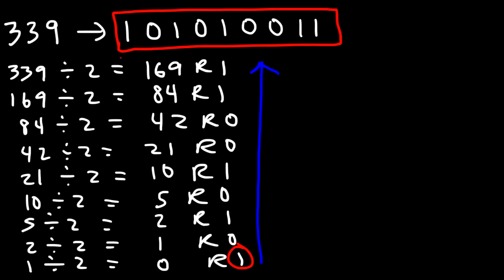And so that's it for this video. Now you know how to convert decimal numbers into binary numbers. You have two ways of doing it. Thanks for watching.